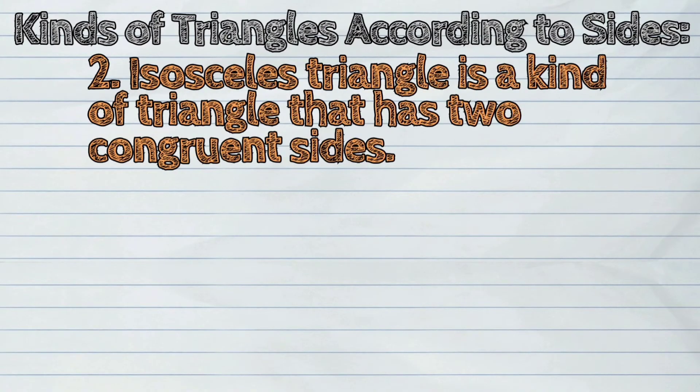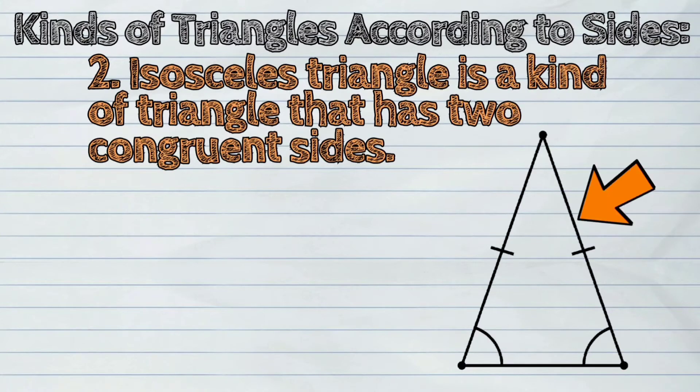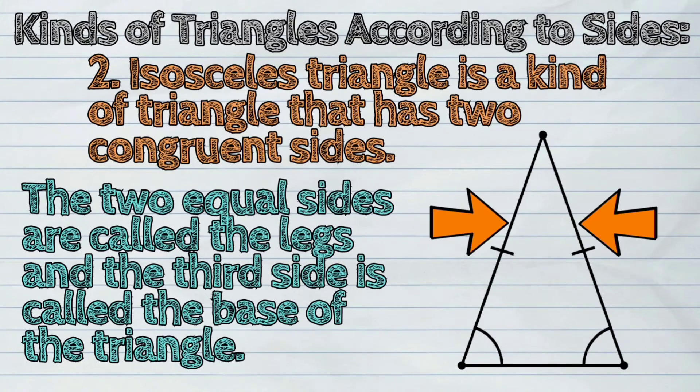Isosceles triangle is a kind of triangle that has two congruent sides. The two equal sides are called the legs, and the third side is called the base of the triangle.